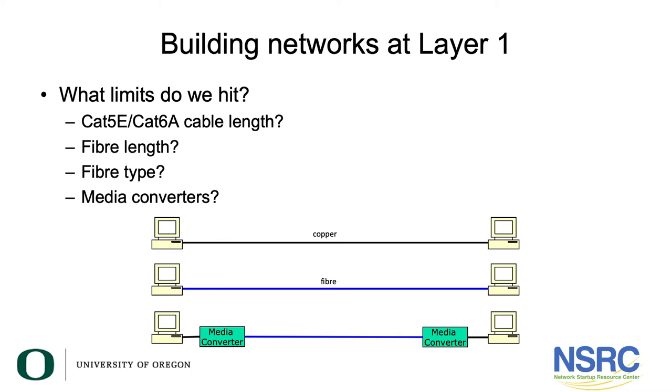If you want to go longer than that, you might have to look at some other kind of medium. Fiber would be another option. Depending on what speed and distance you need, there are a number of different options. The general rule is that multi-mode fiber is the worst — it runs at the slowest speeds and the shortest distances — and if you have single-mode fiber, that runs at high speeds and over very long distances.